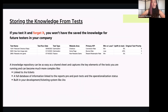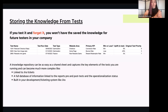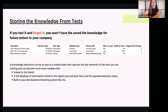The meat and butter of this is that storing knowledge from your tests is something you absolutely need to do. If you test things and forget them, or don't have them stored in a way that can be easily accessed by a large group of people, you haven't saved the knowledge for future testers and other people in your company. This is a super simple example — you can make this out of a spreadsheet if you really don't have a lot of resources. What you want to do is store as much information as possible about the type of test and make it searchable.